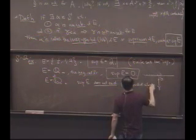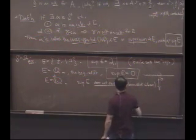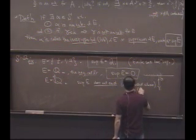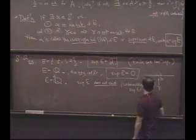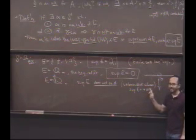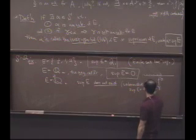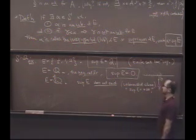And we often write this, later on we'll see, we actually have a way of saying this. We often say sup E is, we use the symbol plus infinity, okay, which doesn't mean anything. Okay? It's just a symbol. It's just a way of saying this.